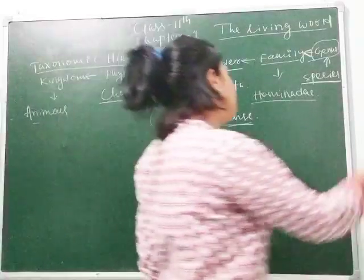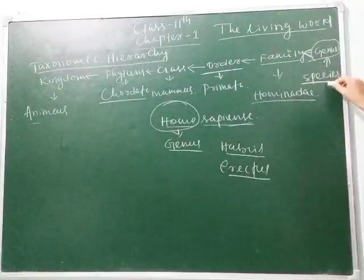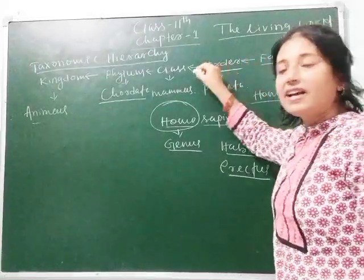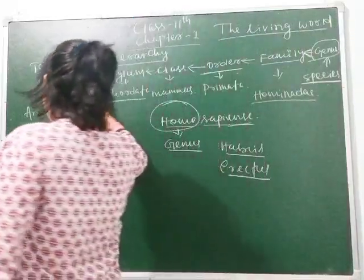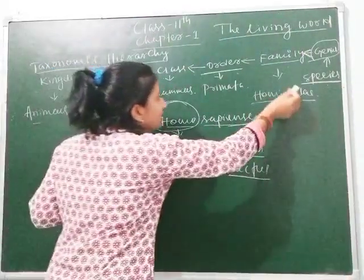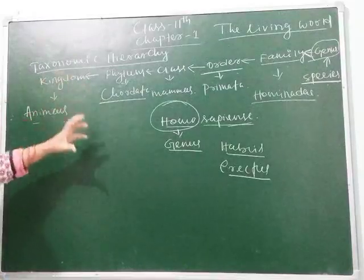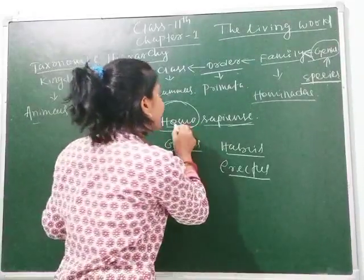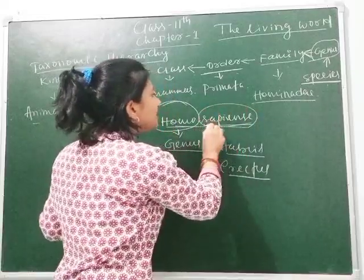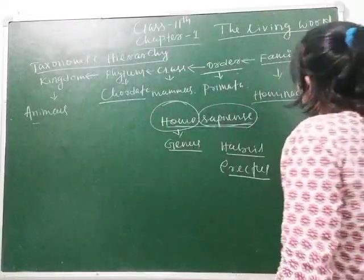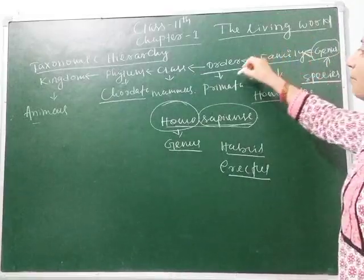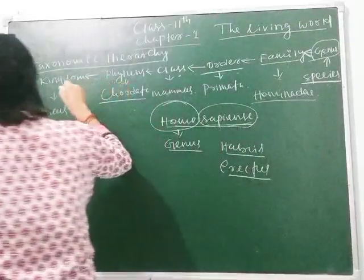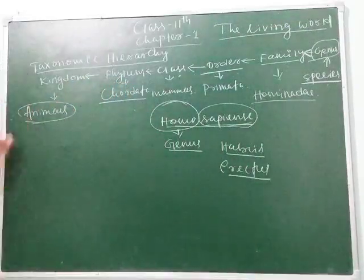If we start from the lower order: first species, then genus, then family, then order, then class, then phylum, and then kingdom. For human beings — modern man — our biological name is Homo sapiens. Sapiens is the species, Homo is the genus, Hominidae is the family, Primata is the order, Mammalia is the class, Chordata is the phylum, and Animalia is the kingdom.